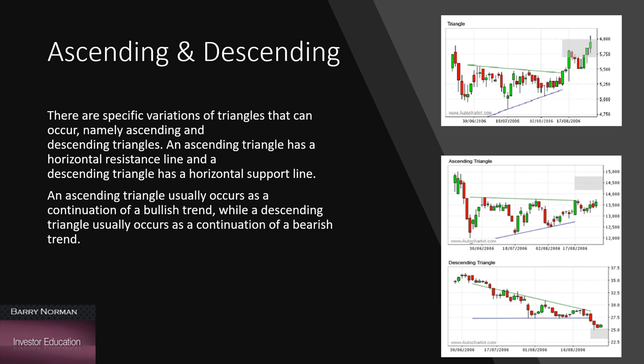A descending triangle has a horizontal support line and an angular resistance line, where a descending triangle is the exact opposite. And a symmetrical triangle has the two angles or the two levels above them, forming the triangle, the support and resistance lines coming together at the same degree.